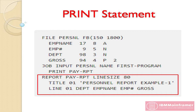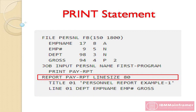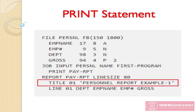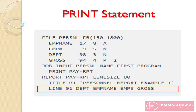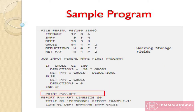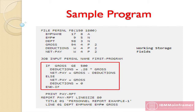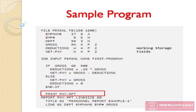So far, we have seen three such statements in our sample program: Report, Title, and Line. In our sample program, the print statement is placed directly after the conditional statements that we added in the previous chapter. Once the conditional statements have been run against a record of the personal file, the print statement tells EasyTreeve to execute the report definition statements. The print statement is identified by a user-supplied name: pay-rpt.